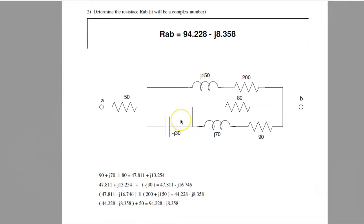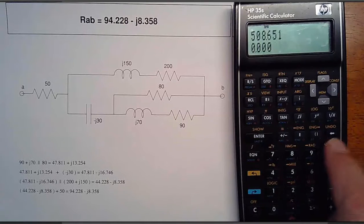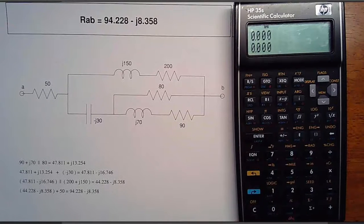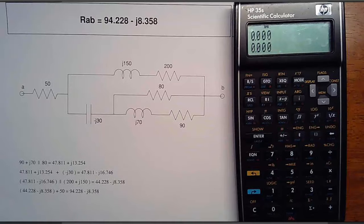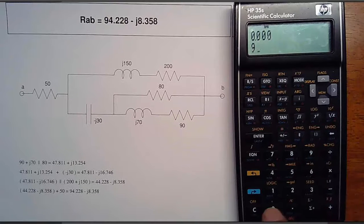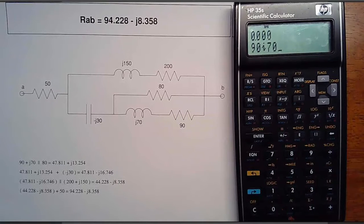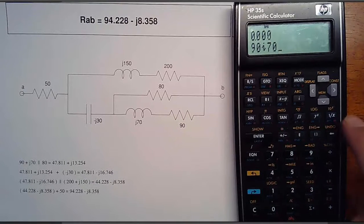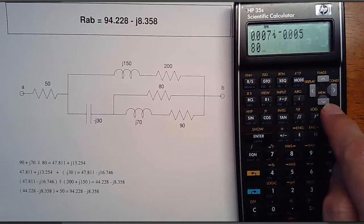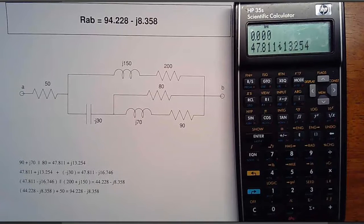Problem 2 is adding resistors in parallel. This is where HP calculators really shine. To illustrate that, let's find this impedance using an HP calculator. I start with 90 plus J70, in parallel with 80. So 1 over R1, inverse of 80.